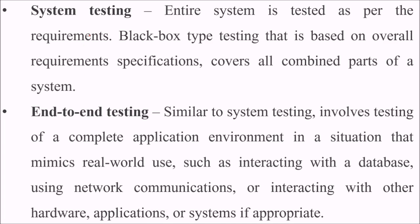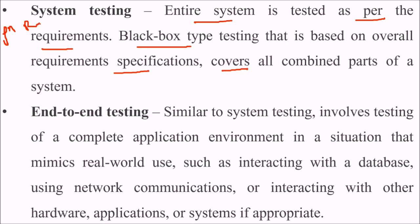Then system testing — the entire system is tested as per the requirements. Entire system means even if it has different parts, modules, or multiple applications, you combine them with hardware and make a system as a whole, and that entire system is tested as per the requirements. This is black box type testing based on overall requirement specification. It covers all combined parts of a system, checking both functional and non-functional requirements.